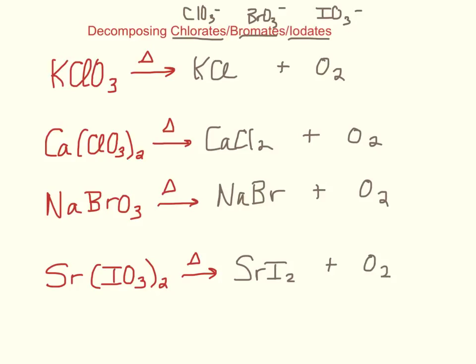So the chlorate becomes a chloride, chlorate, chloride, bromate, bromide, iodate, iodide, and you always make oxygen gas.